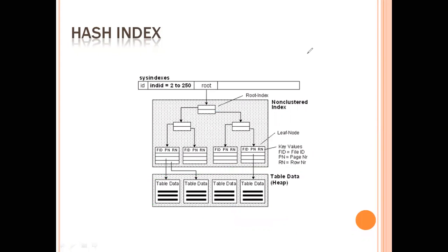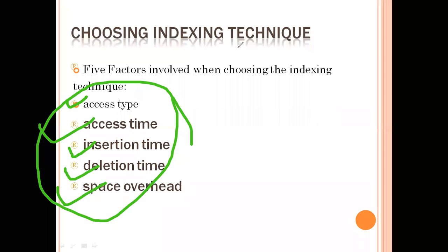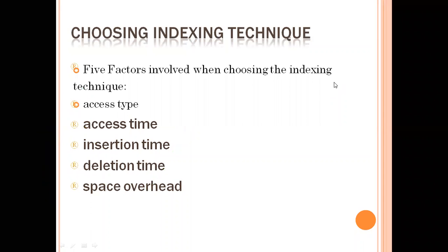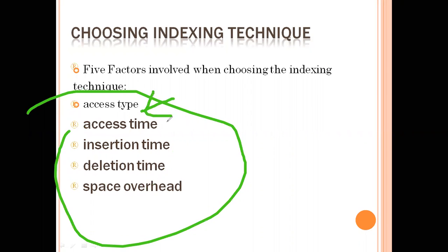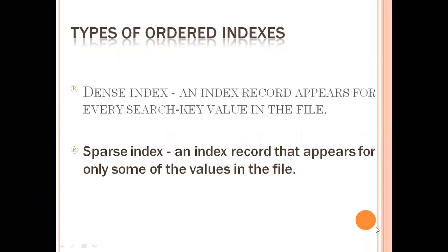Now, what is the way of choosing a particular indexing technique? It depends on five factors: access time, access type, insertion time, deletion time, and space overhead. Note these down. I am not going into the details of all of them here, as I will cover them in individual lectures. I'll give you these factors as an assignment — you need to determine what each means in the context of choosing an indexing technique.